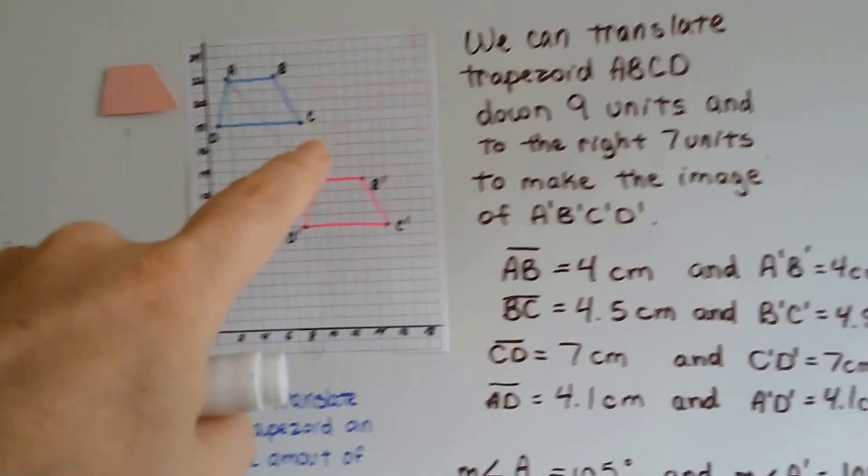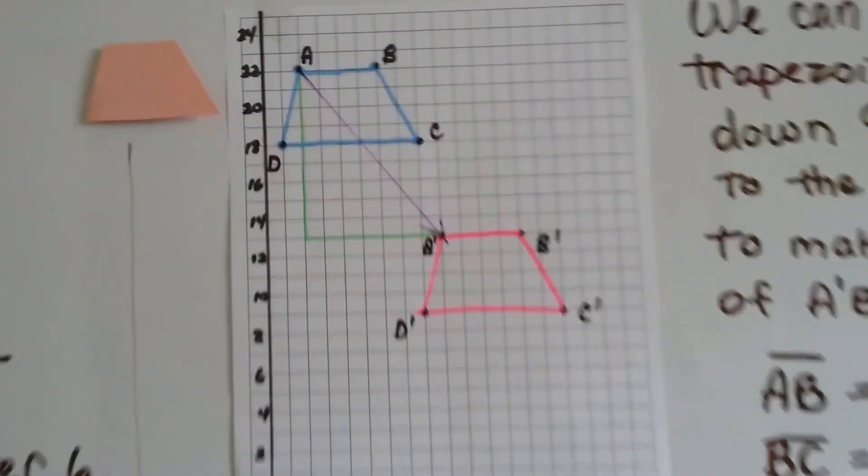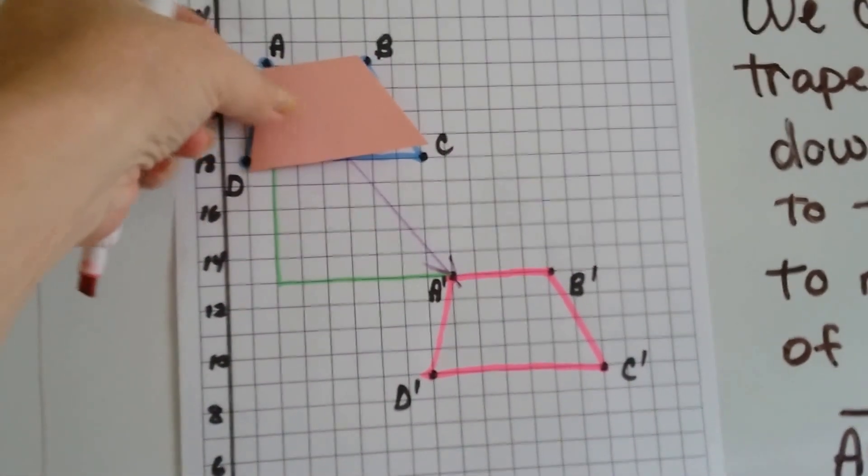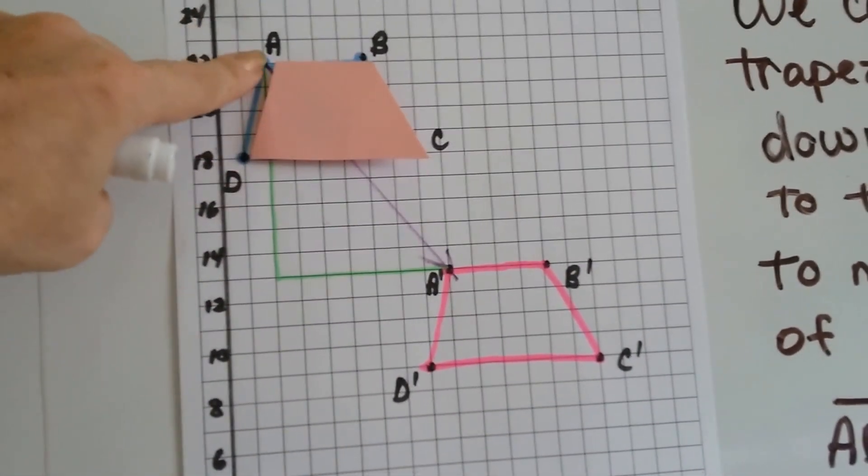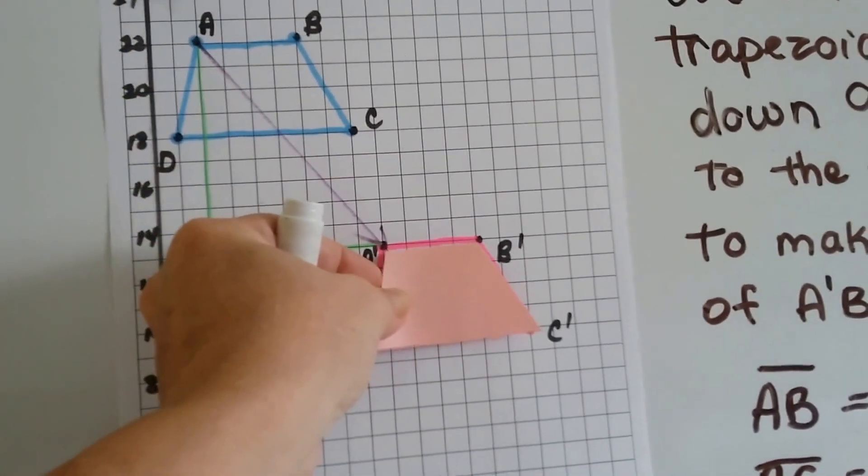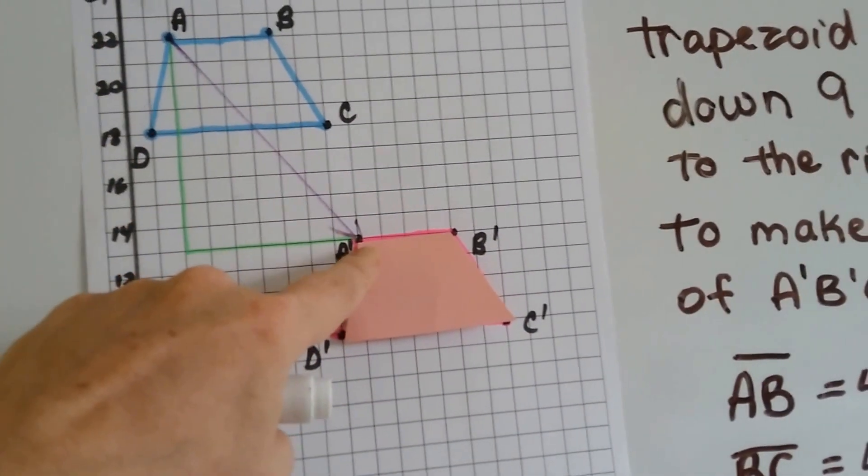This trapezoid is the same as this trapezoid. If I took my little magnet trapezoid here and we covered it up like that, we could see that point A slides down to point A prime. That A is that A.